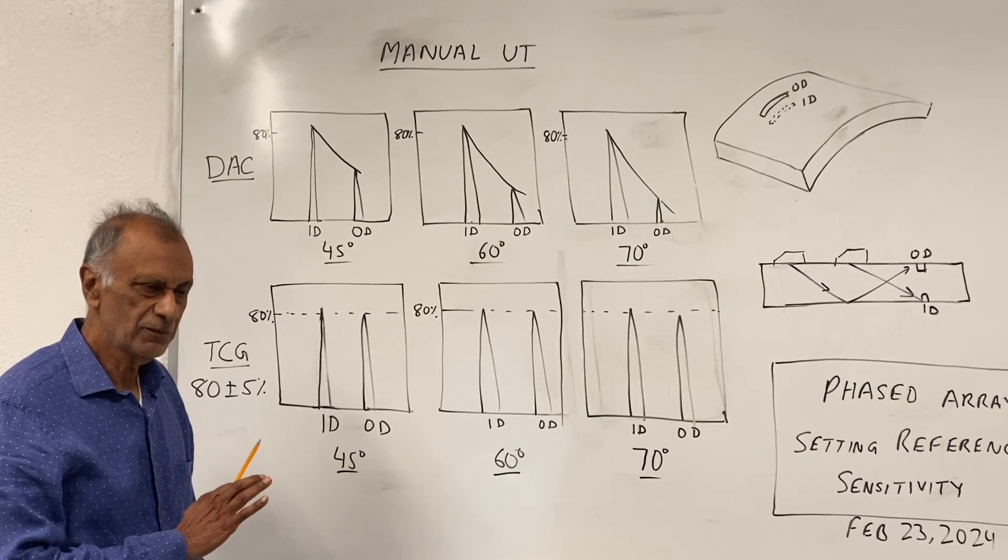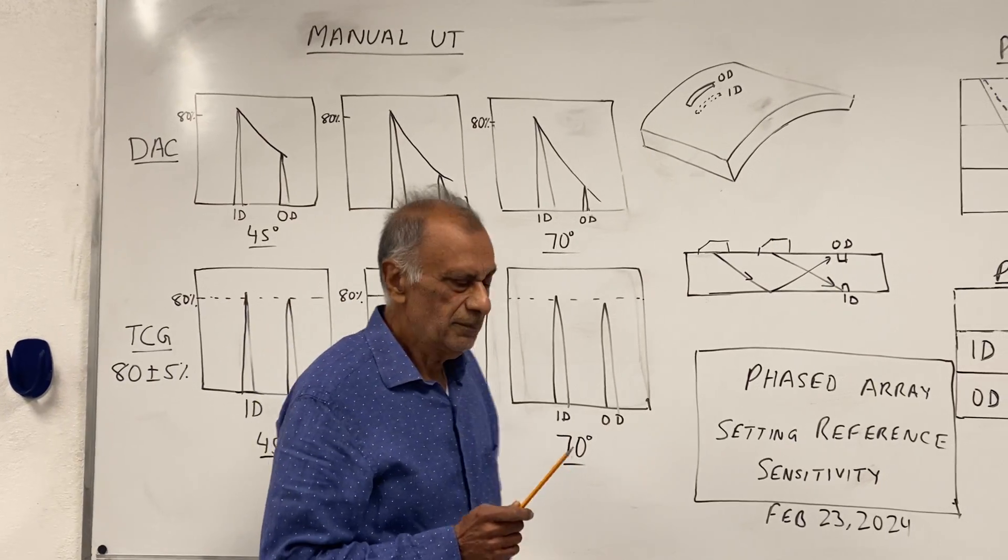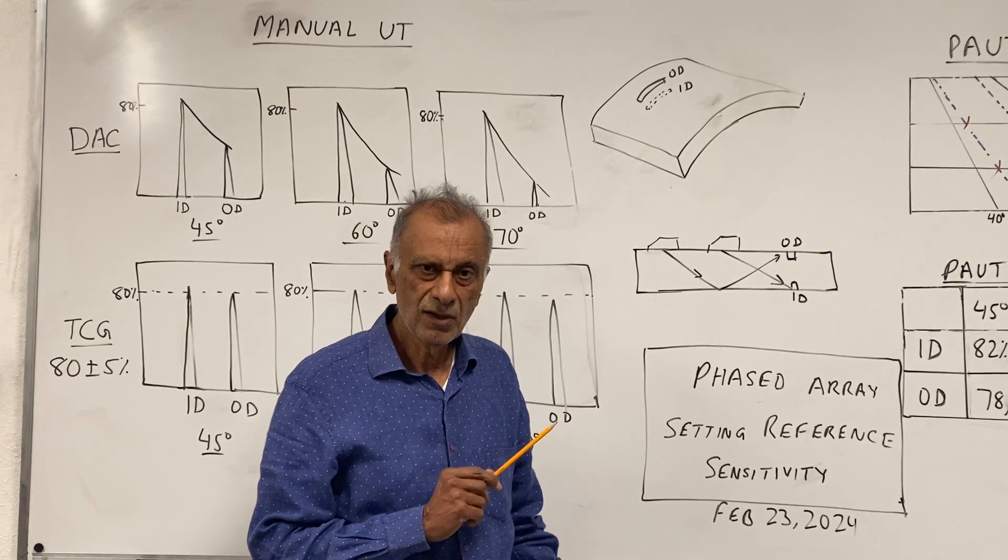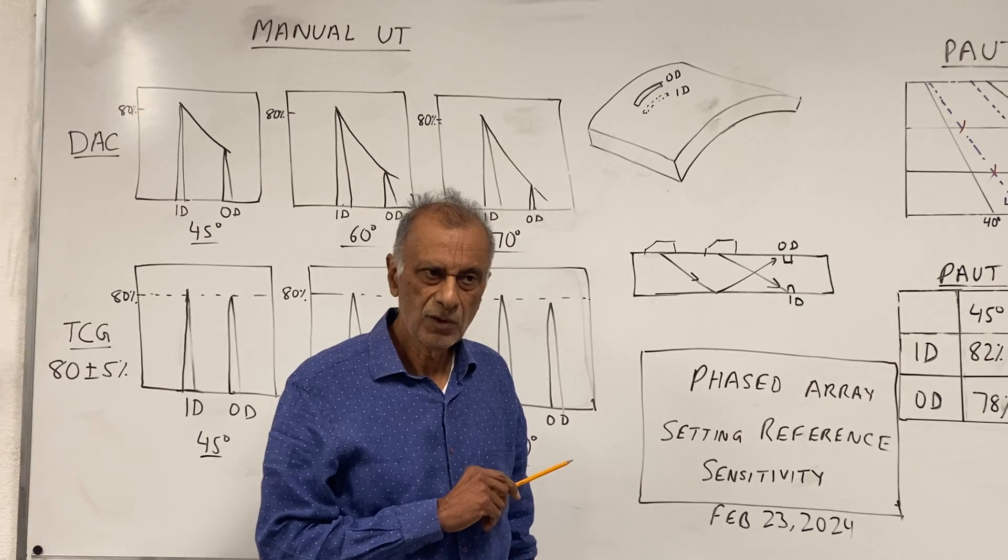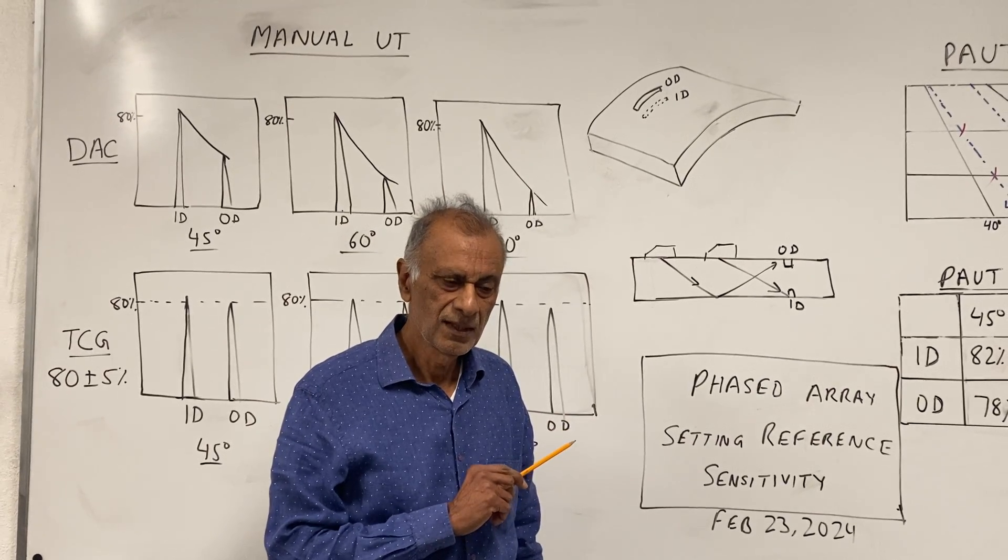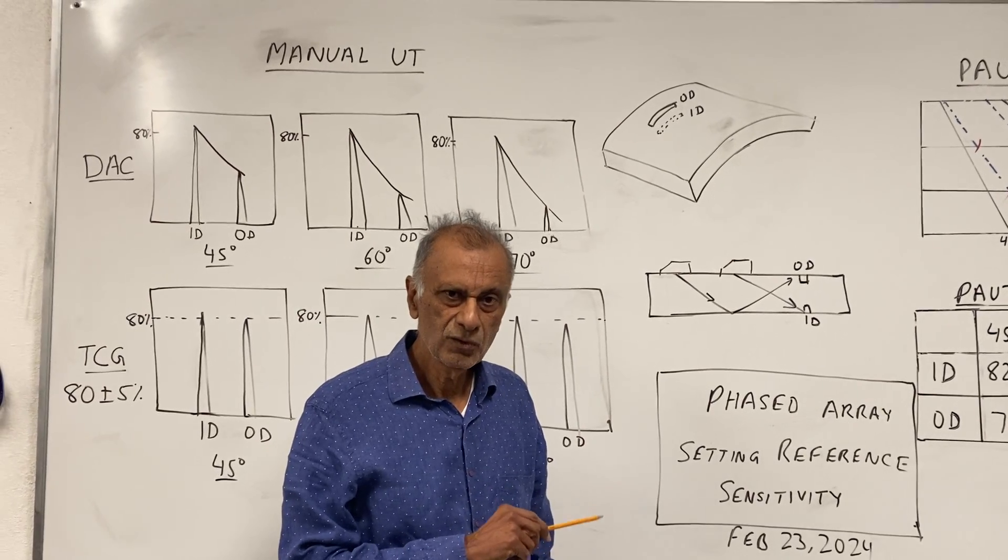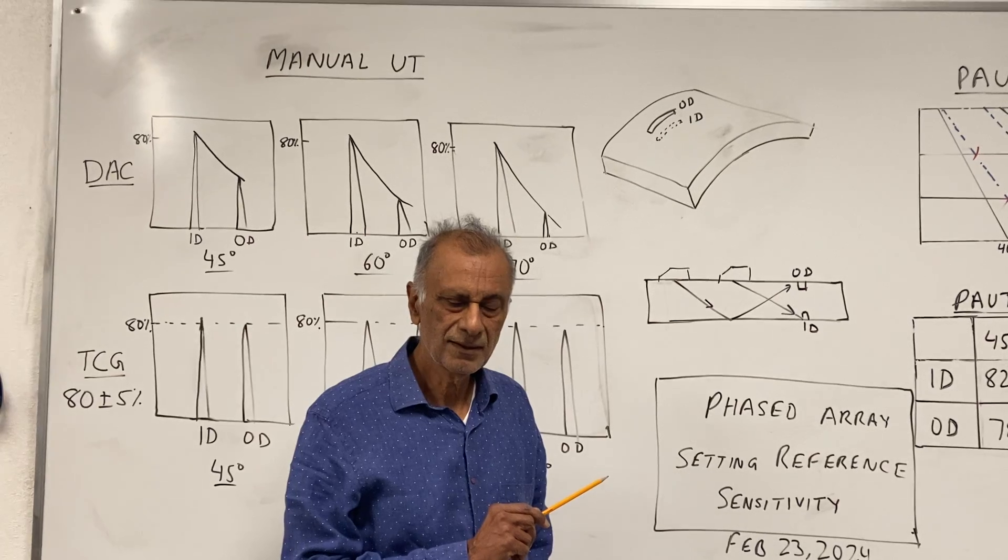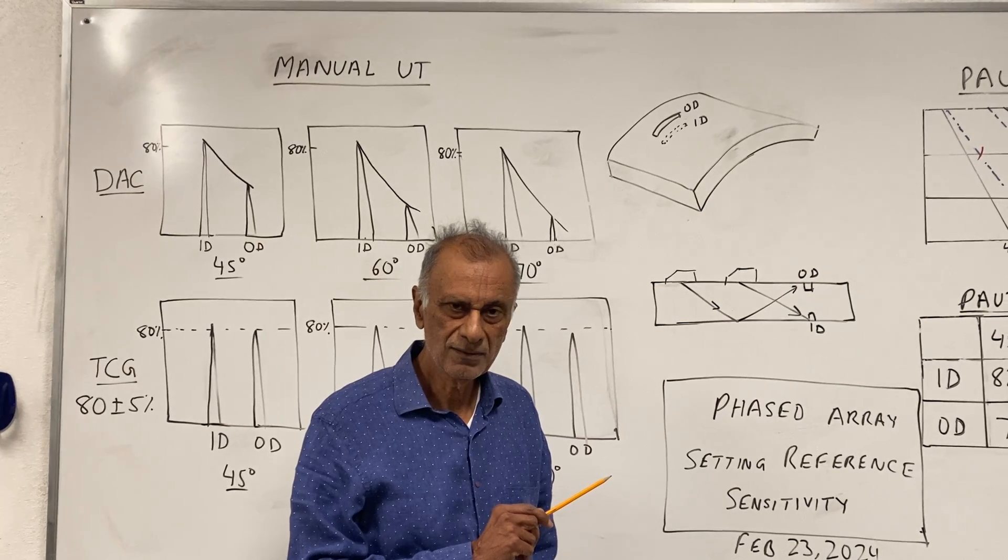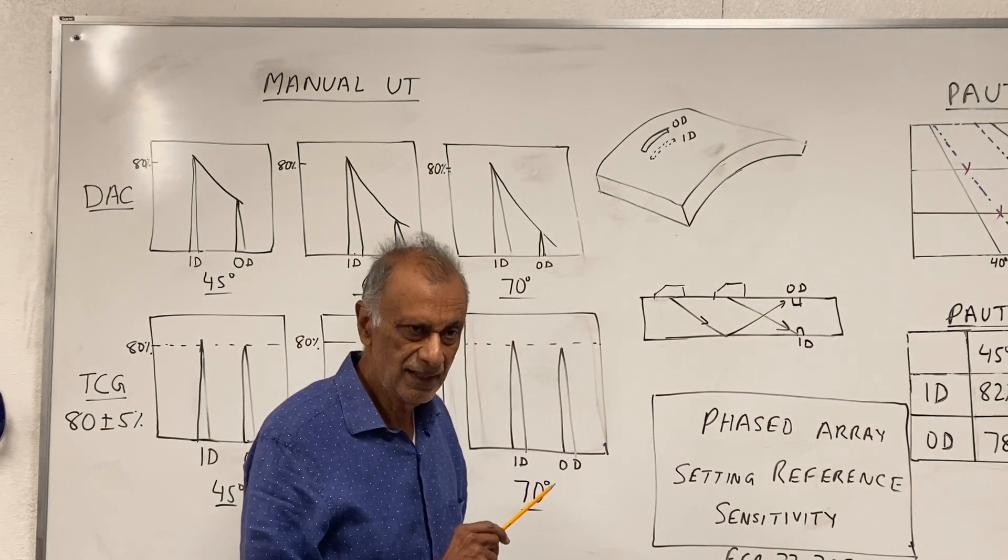And now this is the important step which I'm going to explain how it should be done. Some inspectors are actually getting a TCG curve on some side drill holes in some alternate blocks like IIW block or the NABC block, and then they make TCG on those holes. Then, in order to go to the piping inspection, they do a one point correction or one point setup on the notch and create what they think is a reference level for the piping inspection. That really is not the right way to do it.